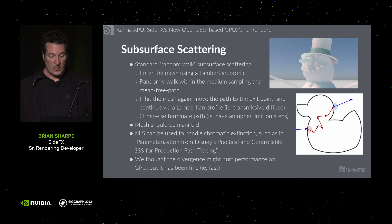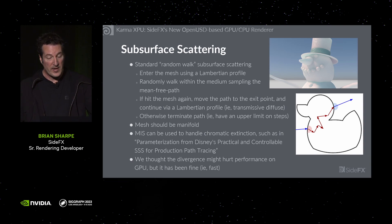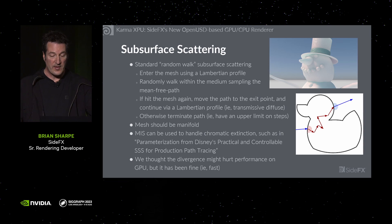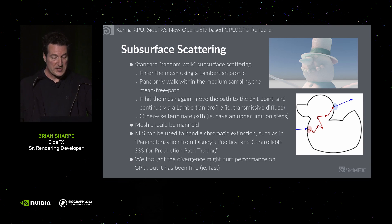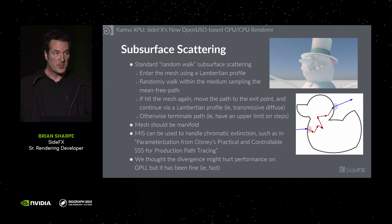Now onto some newer features. We've implemented subsurface scattering, which allows for effects such as skin and snow. We've implemented standard random walk subsurface scattering. The steps are: the path first enters a mesh using a Lambertian profile, seen as this red semicircle. We then randomly walk within the medium. If we hit the mesh again, we move the path to the exit point and continue via a Lambertian profile, seen as this blue semicircle. Otherwise we terminate the path, so we have an upper limit on the number of steps we can take. The mesh should be manifold. Multiple importance sampling can be used to handle chromatic extinction, such as in this Disney paper. We thought divergence might hurt performance, but it's been fast in practice, so we're very happy with the result.